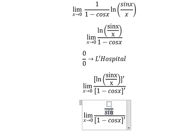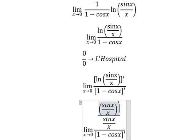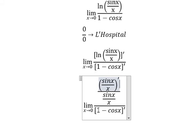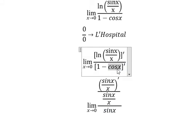We do the first derivative of sin(x) over x. For the denominator: the first derivative of 1 is 0, and the first derivative of negative cos(x) gives positive sin(x), because the first derivative of cos(x) is negative sin(x), and negative times negative gives positive.